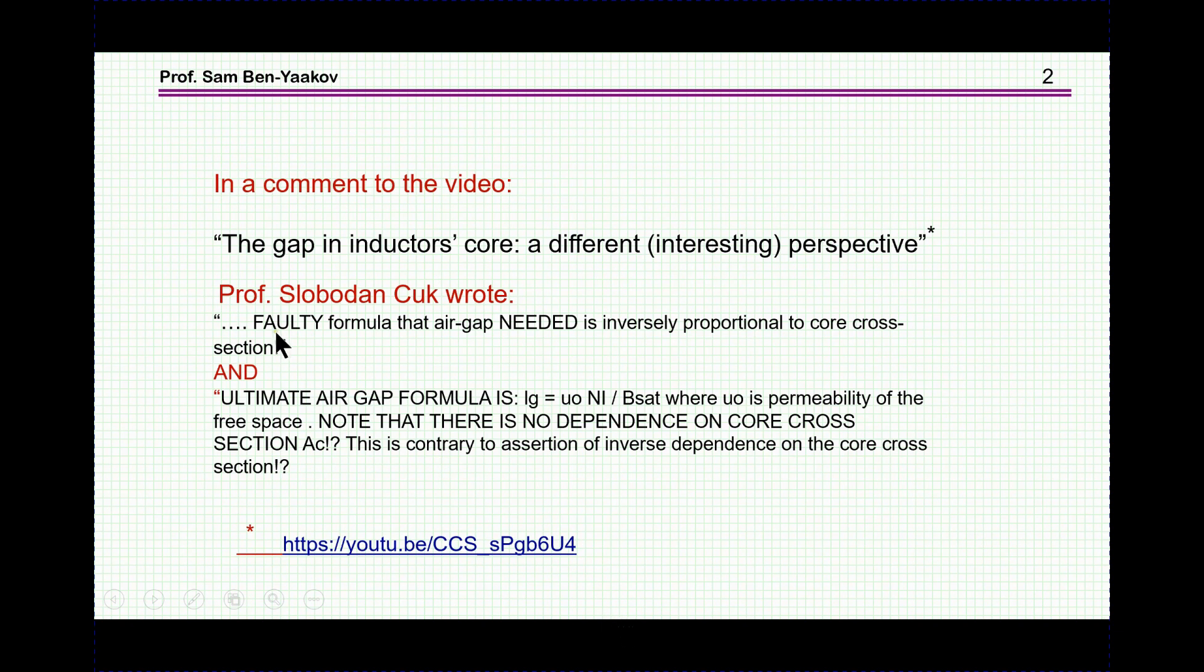Professor Chuck wrote that it's a faulty formula that the air gap needed is inversely proportional to core cross-section. And also that the ultimate air gap formula is the length of the gap equals mu sub 0 NI over B sat, and there is no dependence on core cross-section.